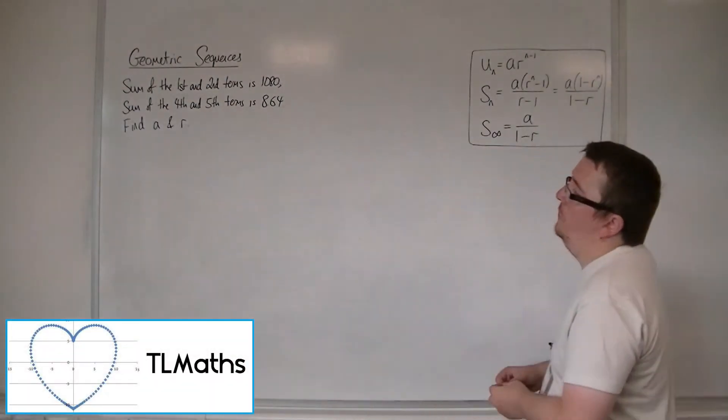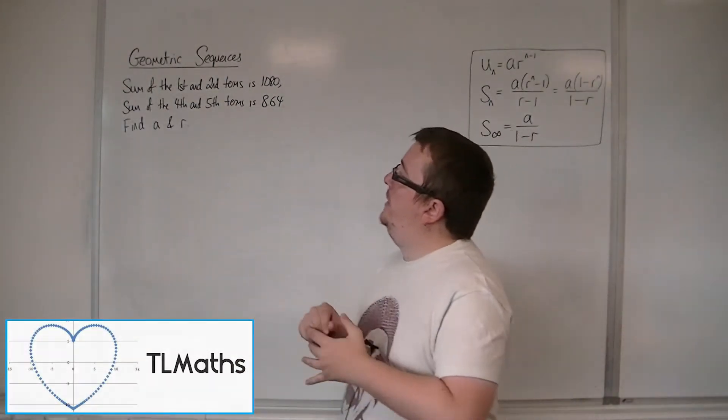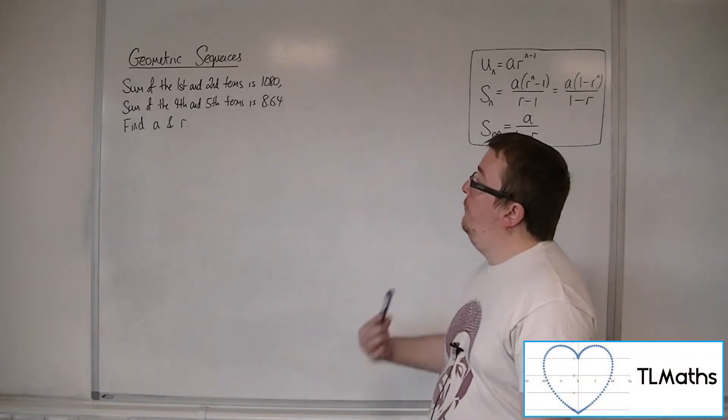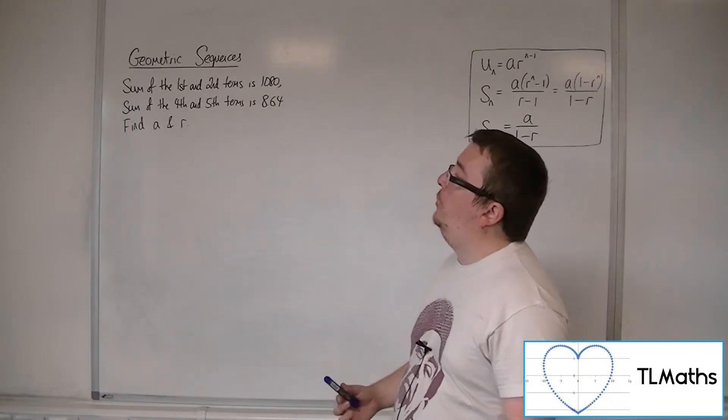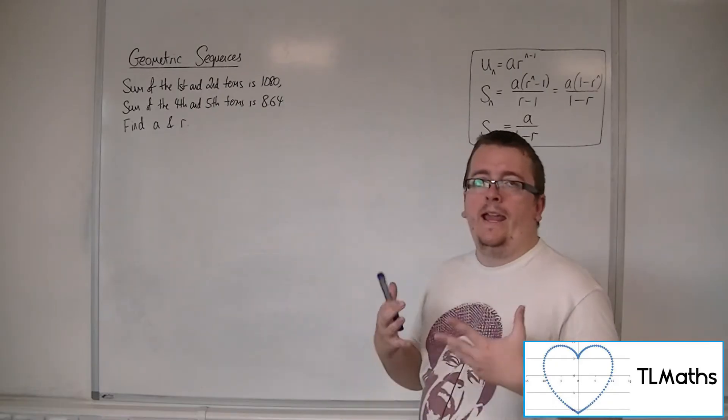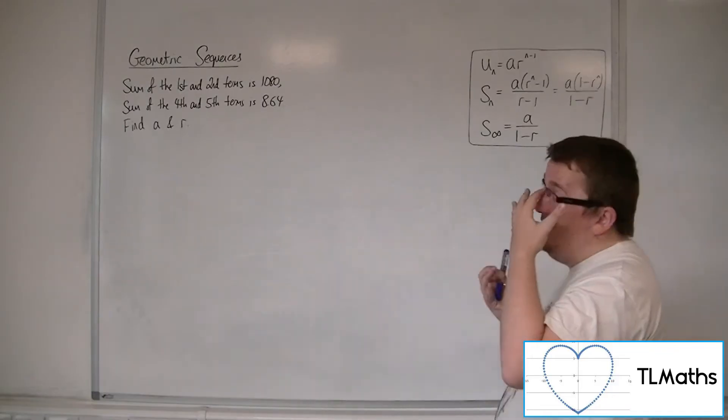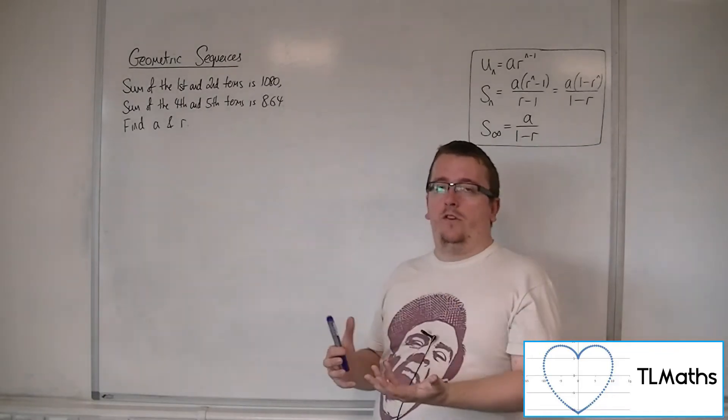In this problem we have that the sum of the first and the second terms is 1080, the sum of the fourth and the fifth terms is 8.64, and we want to find A and R. You can make this problem very complicated for yourself if you're not careful.